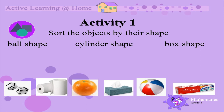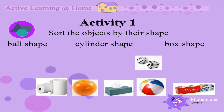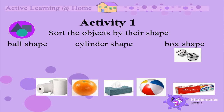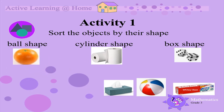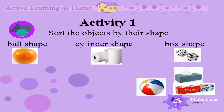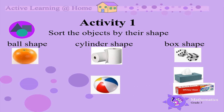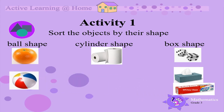The dice is a box shape. The toilet roll is a cylinder shape. The orange is a ball shape. The tissue box is a box shape. The ball is a ball shape. And the toothpaste box is a box shape.